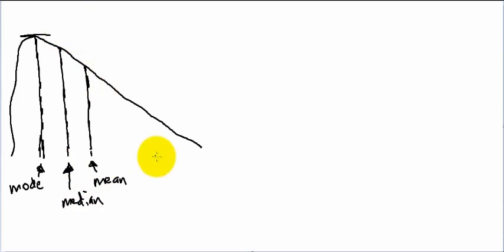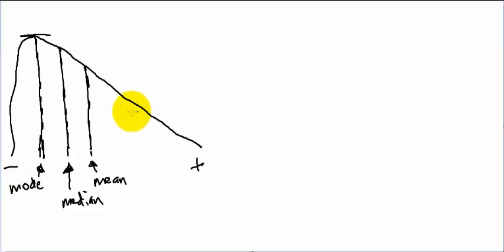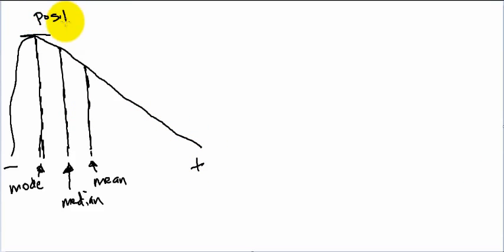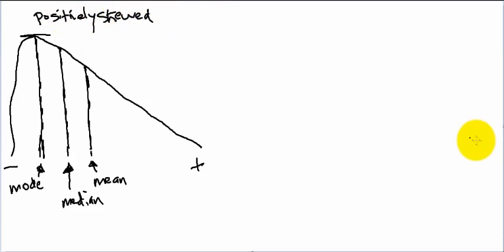On a number line, this is the positive end and this is the negative end. The skew is determined by where the tail goes. The tail here goes to the positive end, so this distribution is known as positively skewed, or it has positive skew.